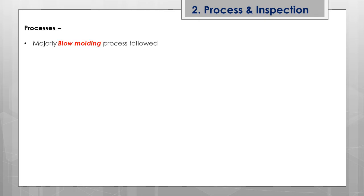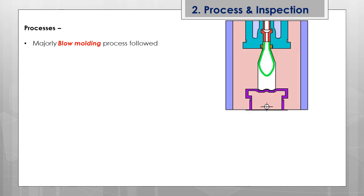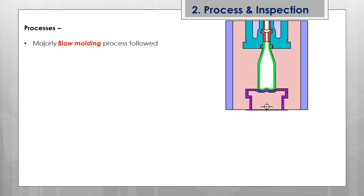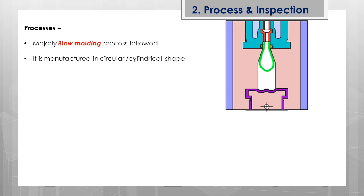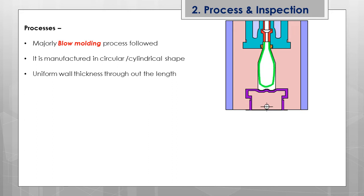LDPE is majorly produced by the blow molding process — you can see a small clip on the right side. Blow molding is a process where the raw material in a semi-solid or molten condition is poured into a circular or cylindrical die, and high-pressure air is blown in. This leads to circular formations due to the heavy pressure air flowing, and the material then cools inside the mold. The final product is taken out of the mold afterwards, and it is basically manufactured in a spherical or cylindrical shape.